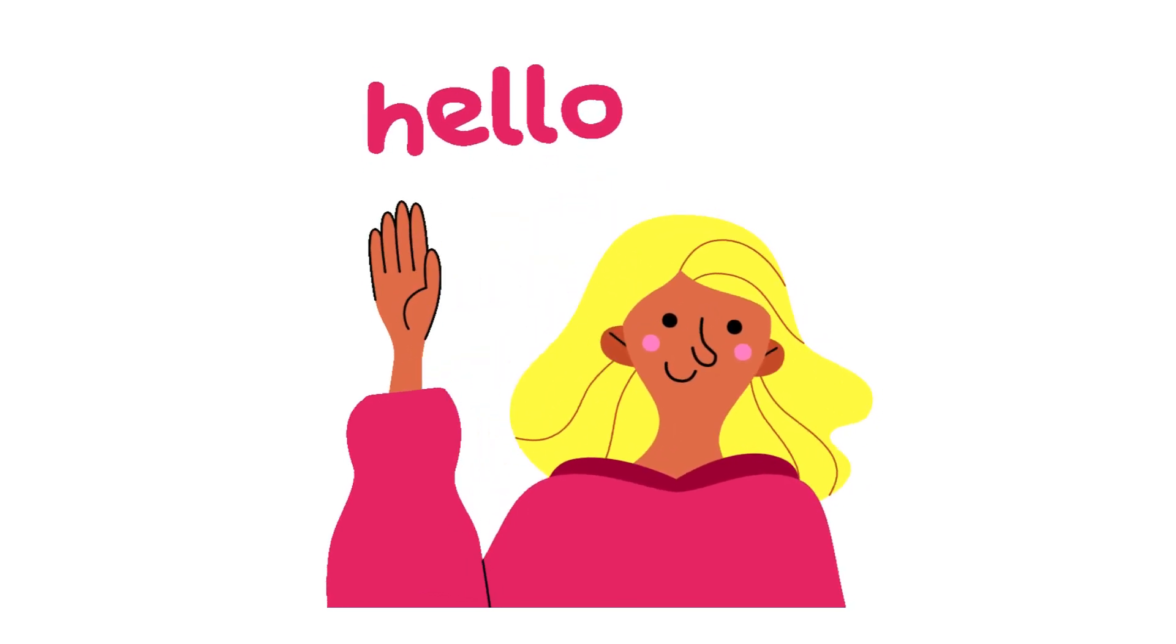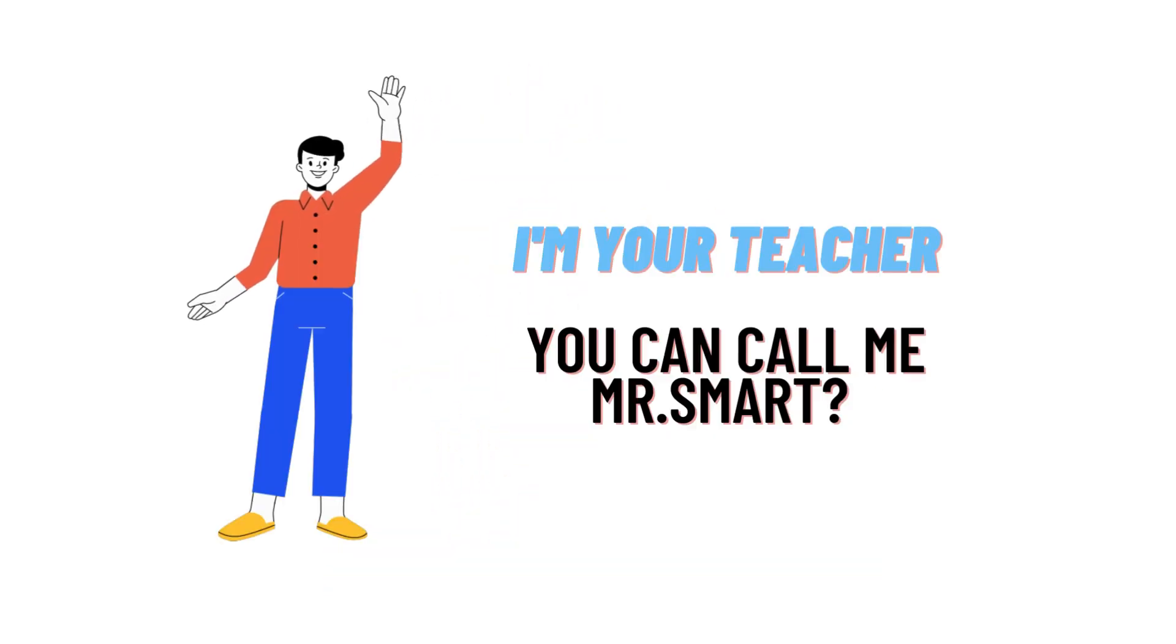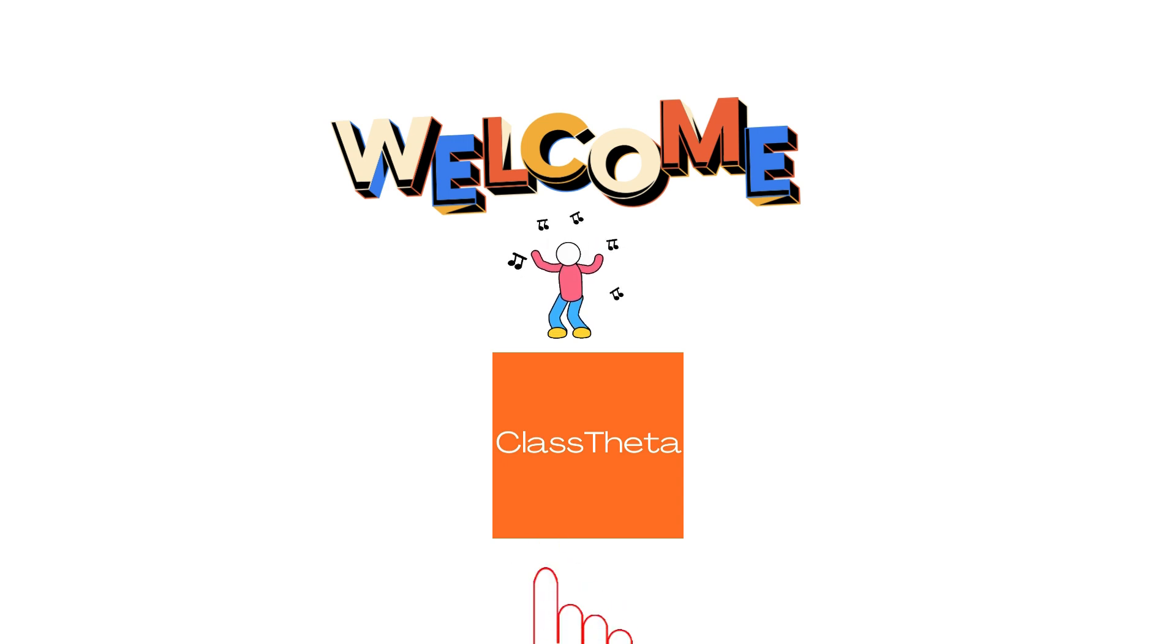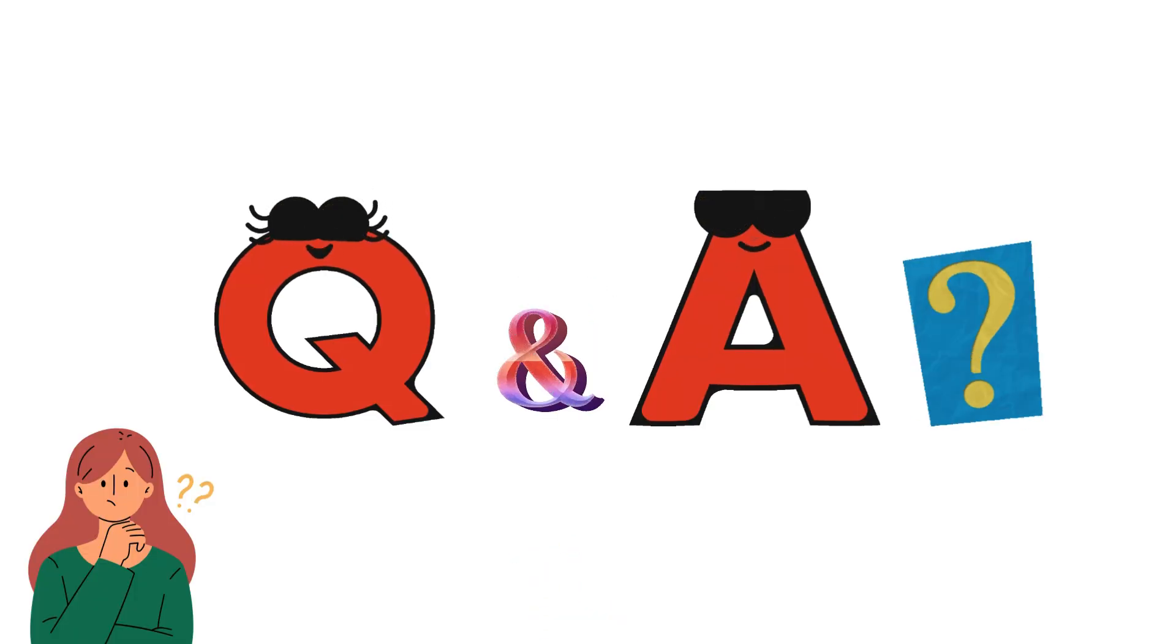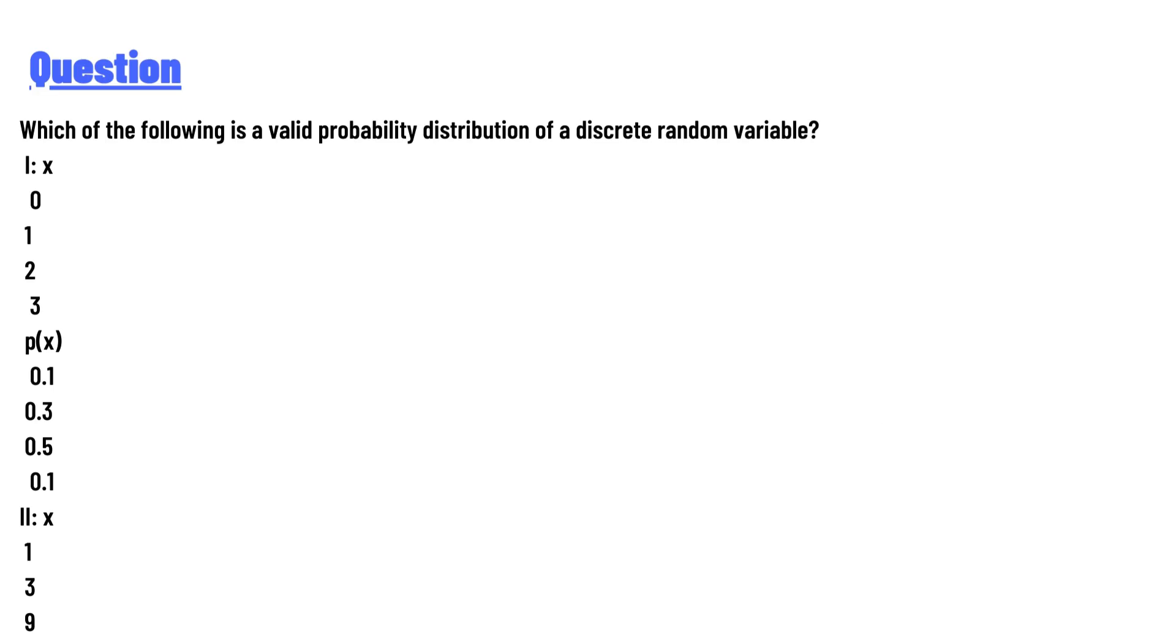Hello everyone, how are you? I am your teacher here and I will teach you different questions and their answers. So I welcome you on ClassTheta.com. Our today's question is: which of the following is a valid probability distribution of a discrete random variable?